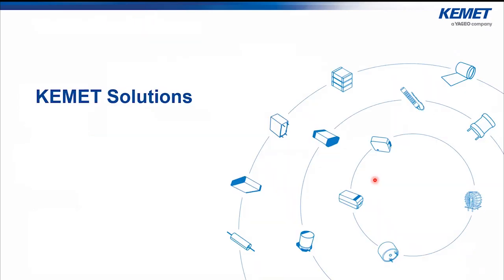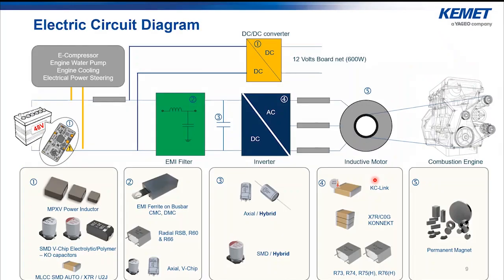What are the different solutions that KEMET can provide? This is shown here in this slide, where we describe all the types of products we can provide for each stage of this 48-volt system, from the EMI to the DC-DC and the different stages of the powertrain. Today we will focus mainly on the DC-link capacitors and on the EMI ferrite that we can provide for the busbar, as common mode choke, differential mode choke, or even dual mode choke.